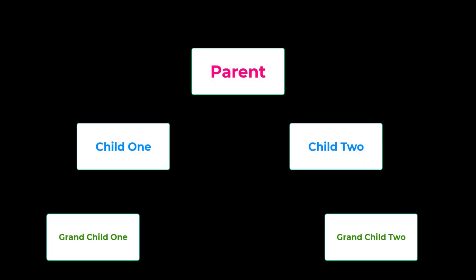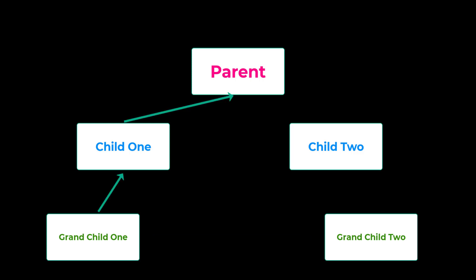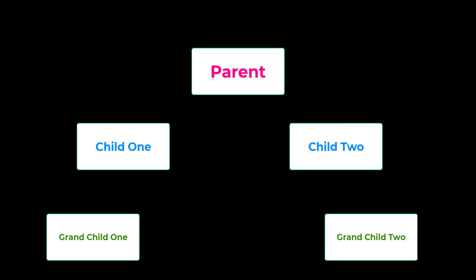This becomes complex when the levels of child and parent components increase. If we need to communicate from a deeply nested component to another, we first need to communicate all the way up to the parent and then all the way down to the target child. This is called props drilling. To overcome this difficulty, we have Context, which I am going to explain in the next video.